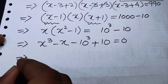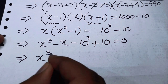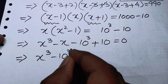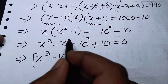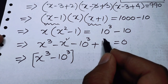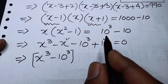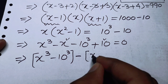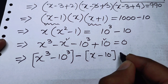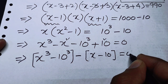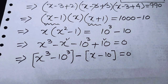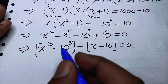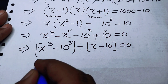Rearranging, we obtain (x cubed minus 10 cubed), and taking minus common from the remaining terms gives minus(x minus 10) equals 0. Now we apply the famous cubic factoring formula.